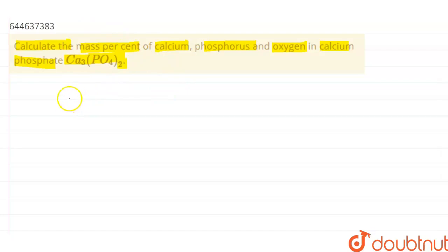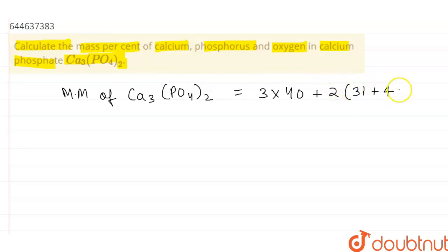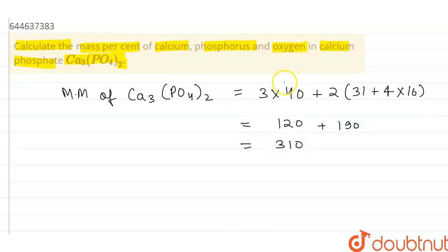First, let us calculate the molecular mass of calcium phosphate. Molecular mass of calcium phosphate = 3 × atomic mass of calcium (40) + 2 × molecular mass of phosphorus (31) + 4 × molecular mass of oxygen (16), which equals 120 + 62 + 128.